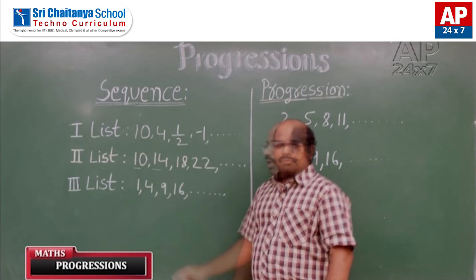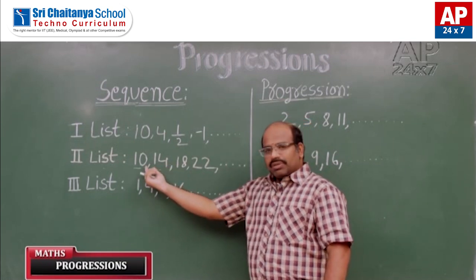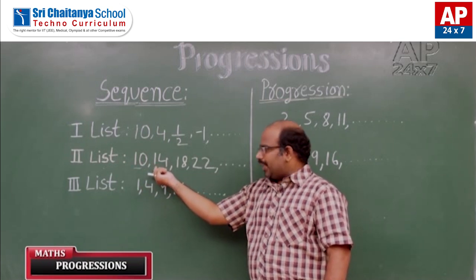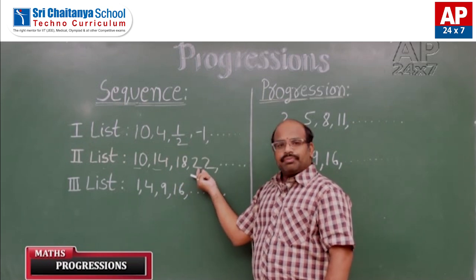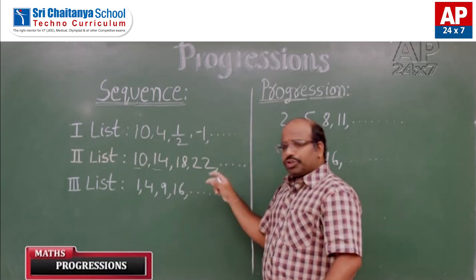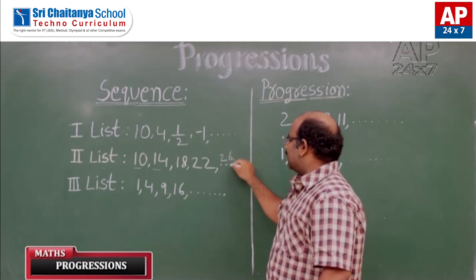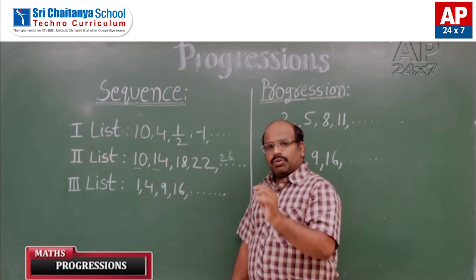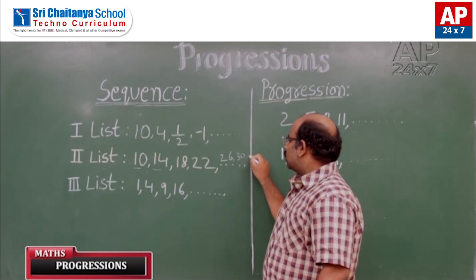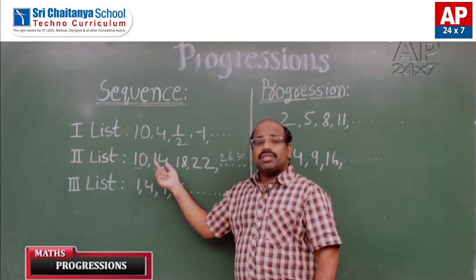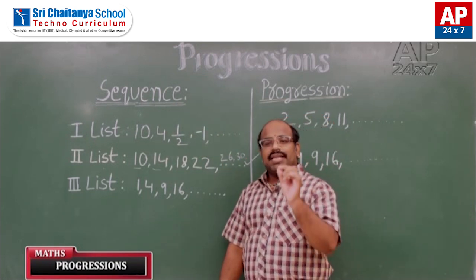Now observe list 2. The numbers given are 10, 14, 18, 22, and so on. Here, 4 is added to 10 to get 14; 4 is added to 14 to get 18; 4 is added to 18 to get 22. Applying the same technique, we add 4 to 22 to get 26, then 30, and so on. This list of numbers follows a certain pattern, so these are sequences.